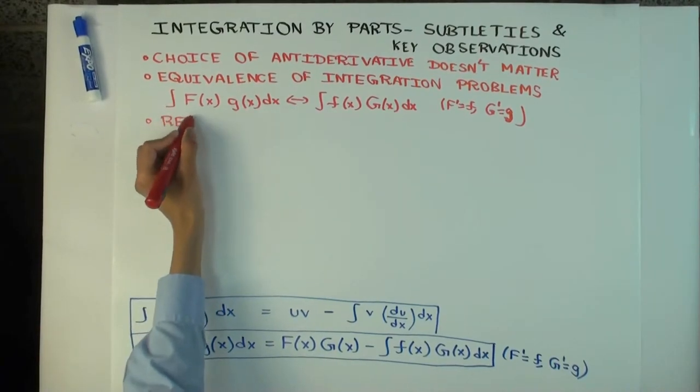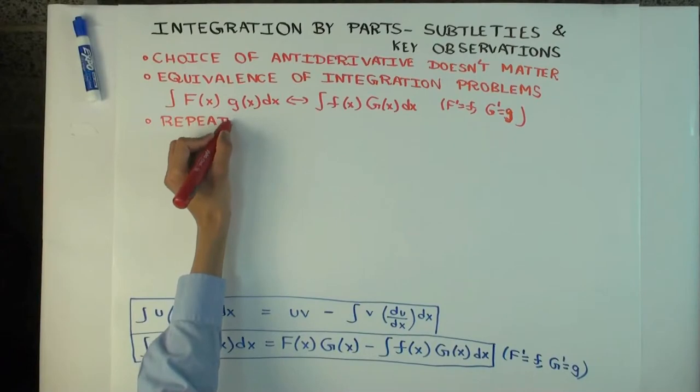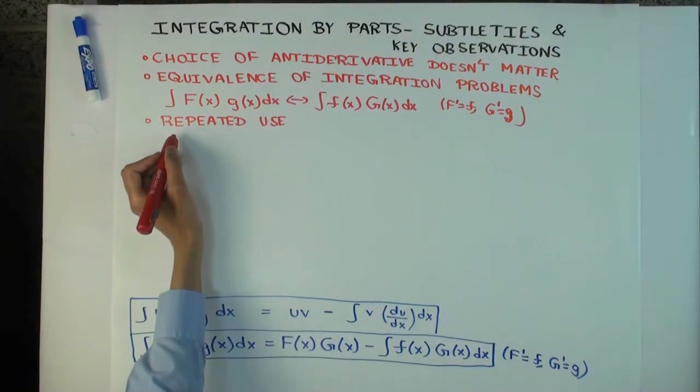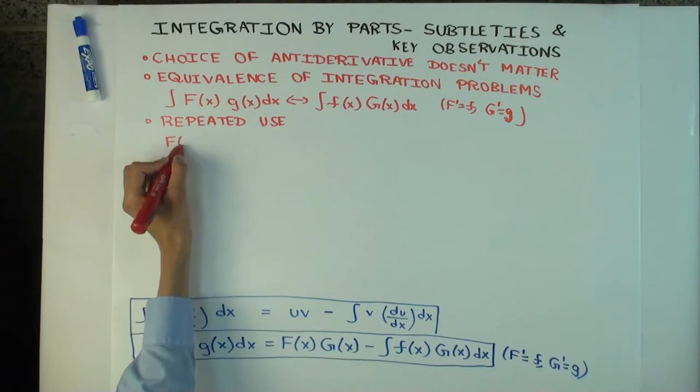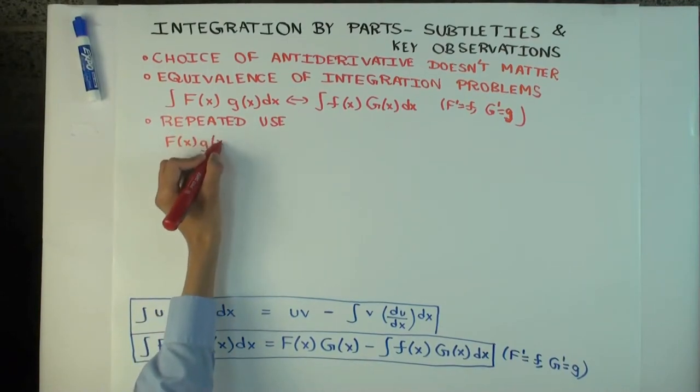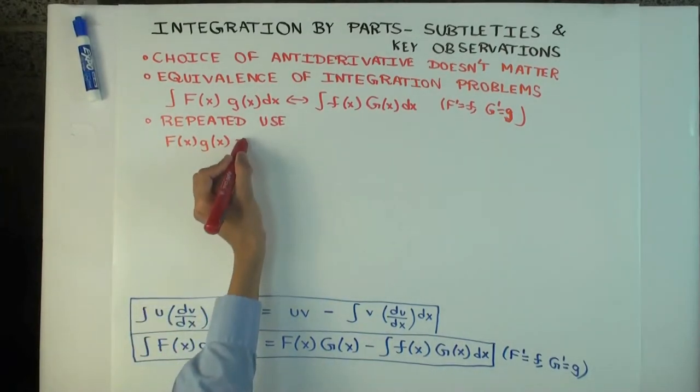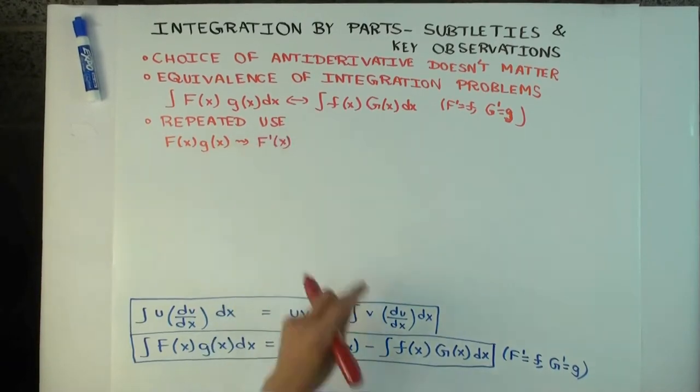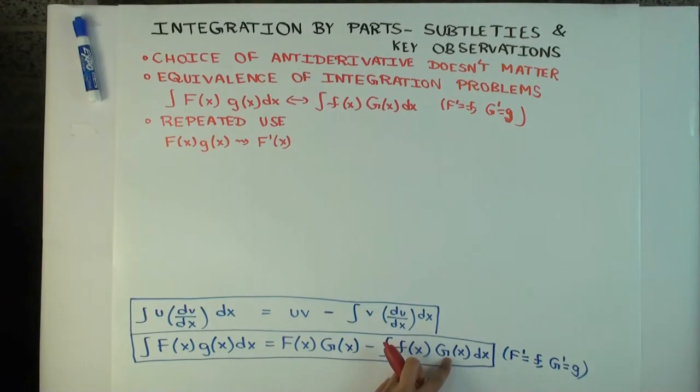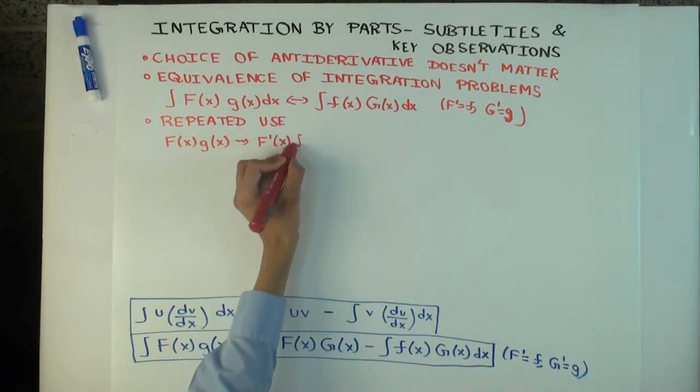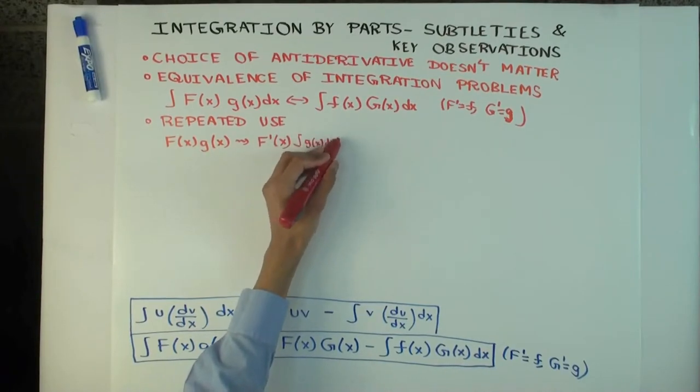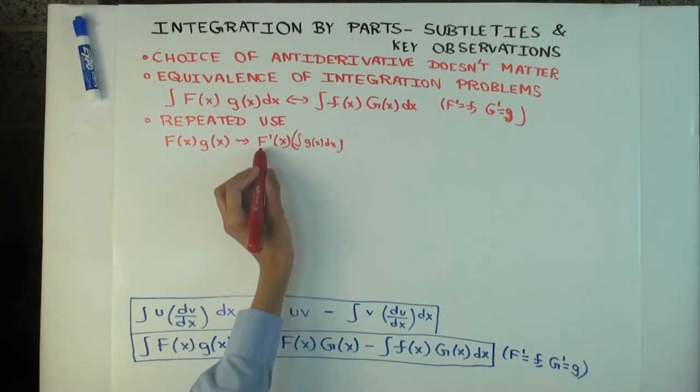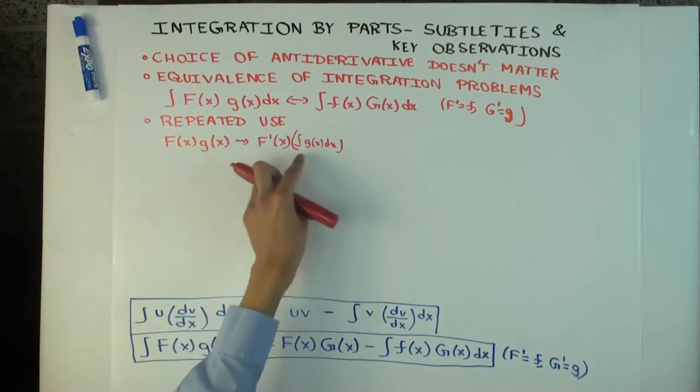So, next I want to touch upon repeated use. Yeah. So, suppose I want to integrate F(x)g(x), capital F times little g. Now, if I use integration by parts once, then I have this new integral, which is little f(x) times capital G(x). Right? And little f is just f prime. So I'll just write it as f prime times integral. So what it's saying is that in order to integrate this function, it's equivalent or it reduces to integrating this product, where I've differentiated F and integrated g.